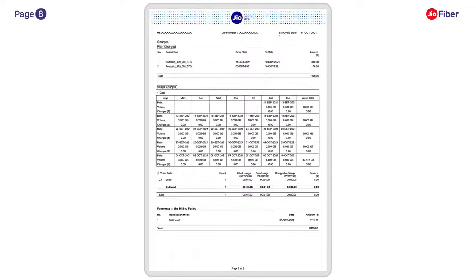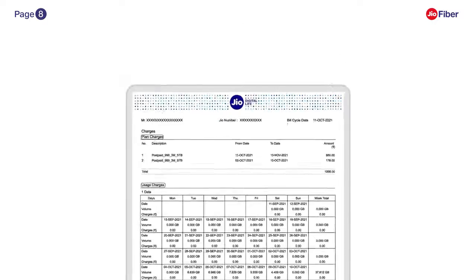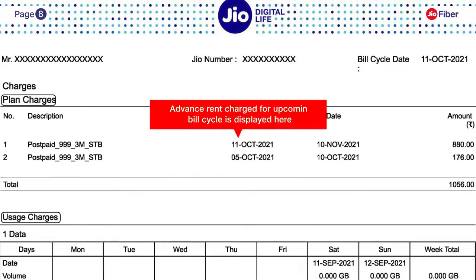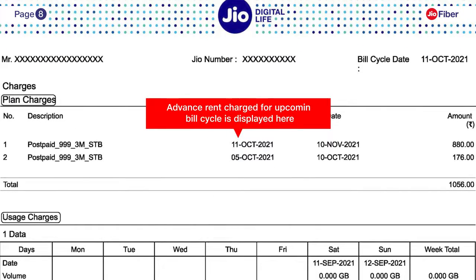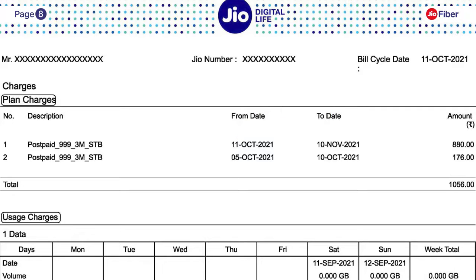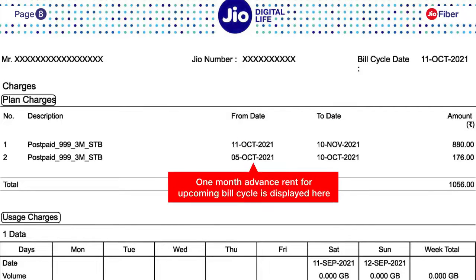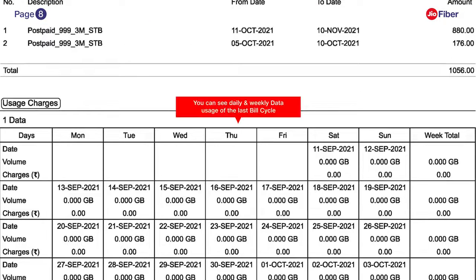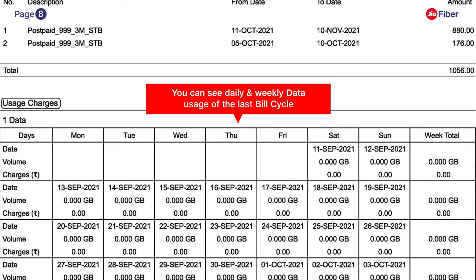In charges on page 8, description 1 will display the advance rent charged for the upcoming bill cycle. Likewise, description 2 will display the prorated advance rent from the activation date to bill date. You can also view your daily and weekly data usage of the last bill cycle in usage charges.